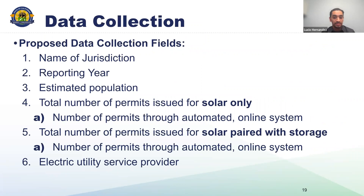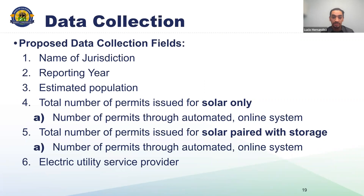Here is a summary of the staff proposal for data we will collect based on our latest proposed guidelines. Our intent is to collect relevant data pursuant to SB 379, which can be quickly compiled and submitted by reporting jurisdictions. These reporting requirements apply to all non-exempt jurisdictions — cities above 5,000 in population and counties above 150,000 in population — regardless of whether you participate in the CalApp program.